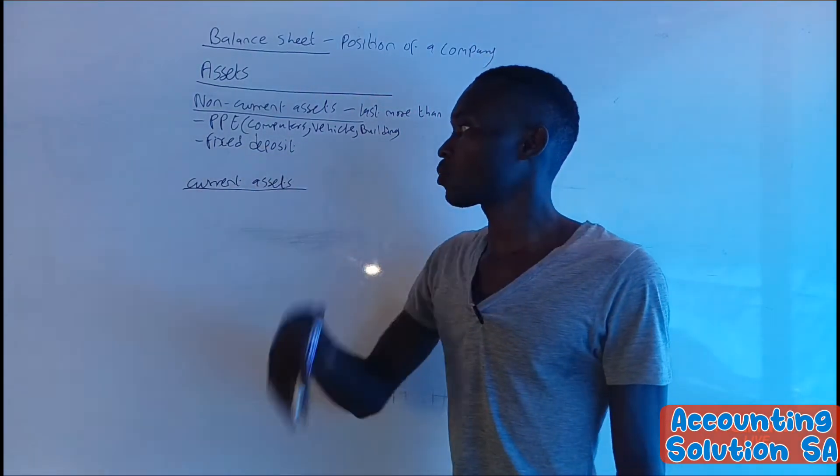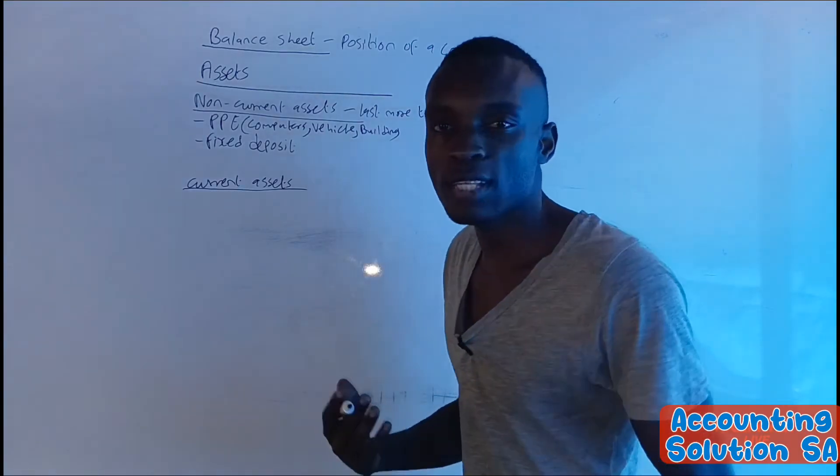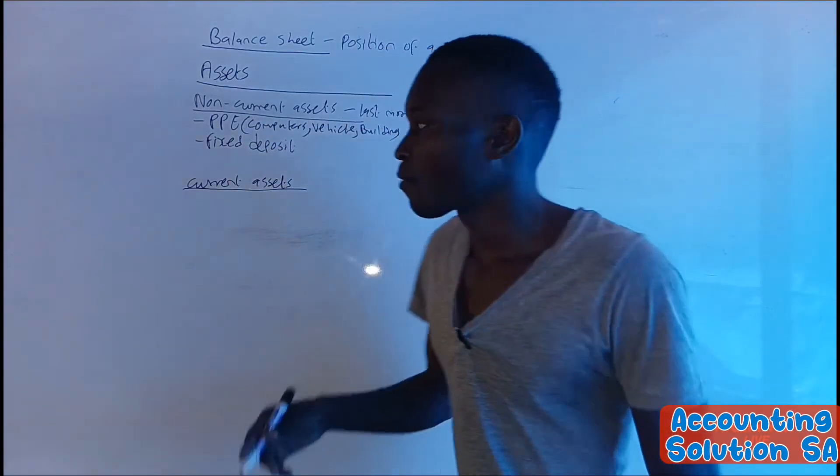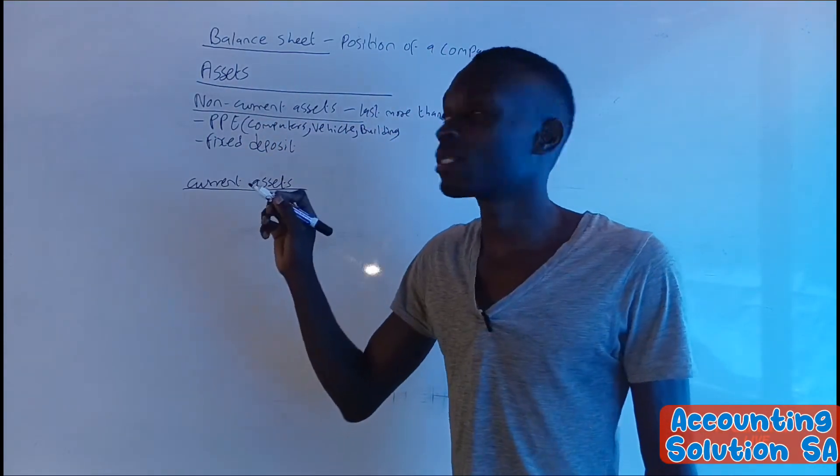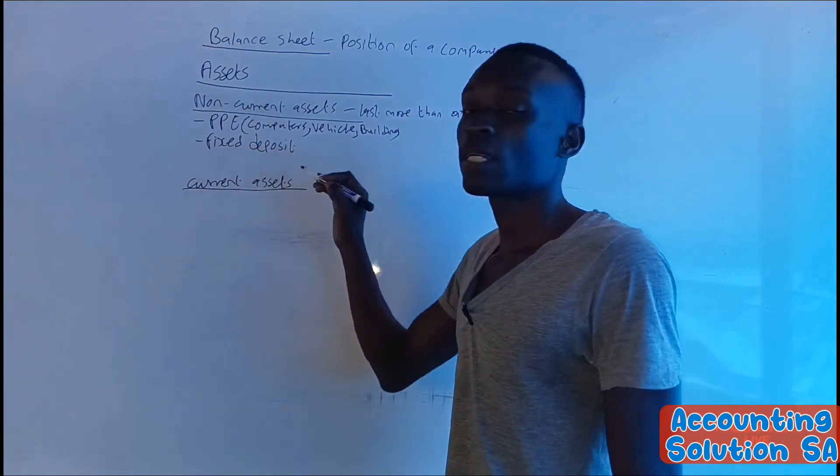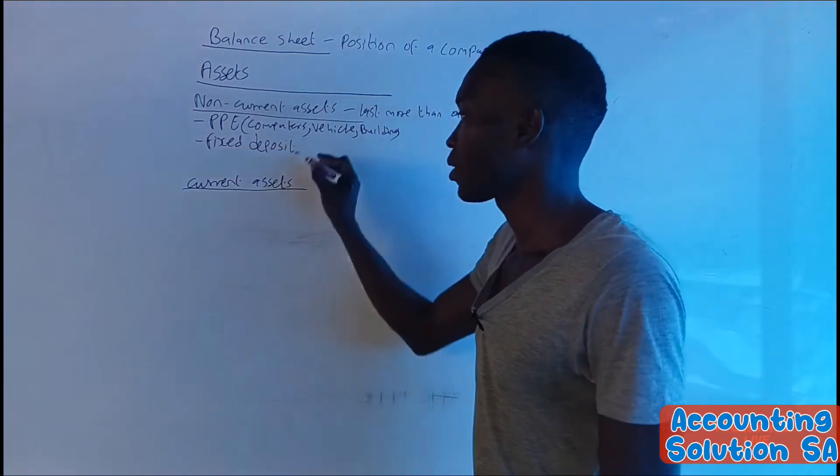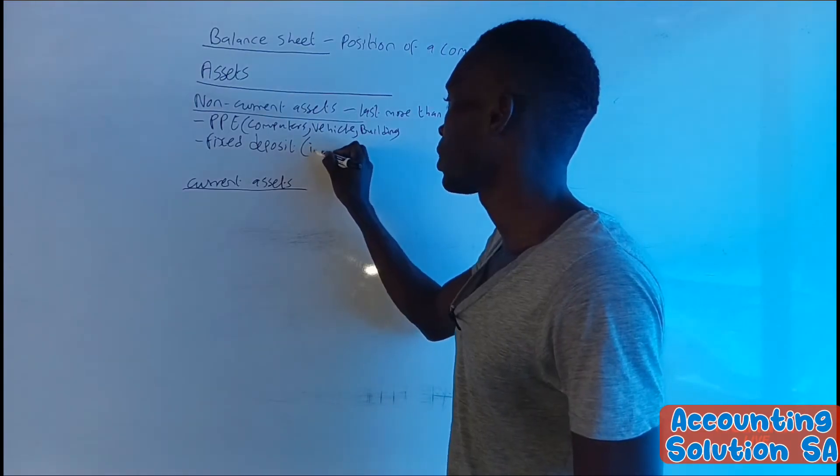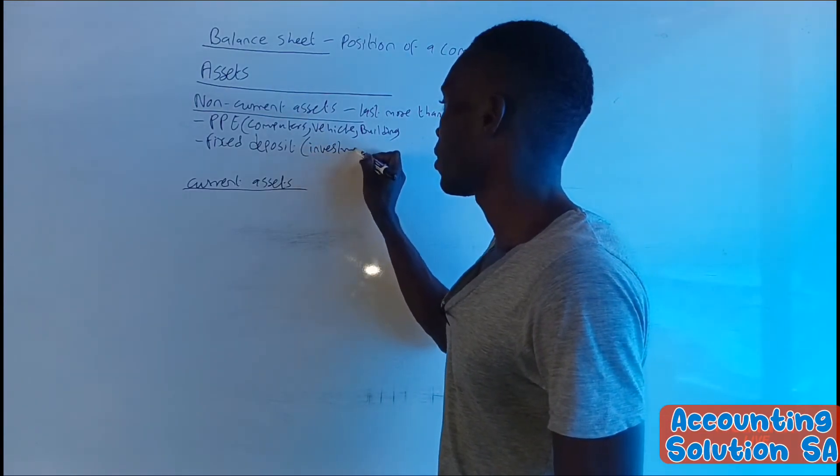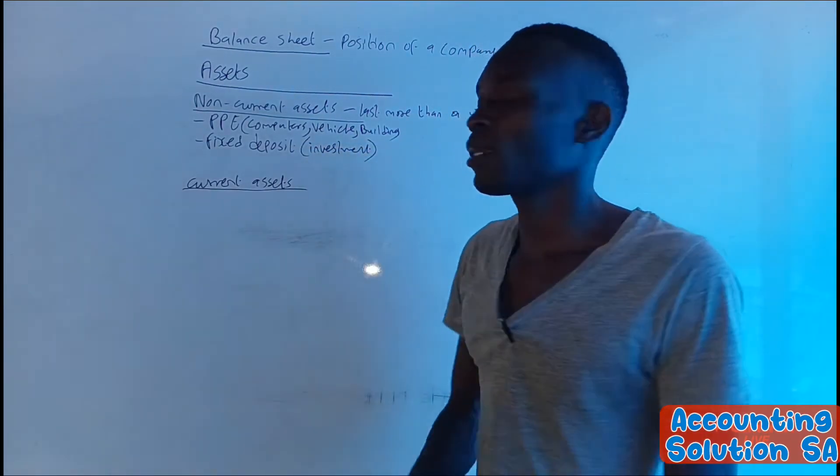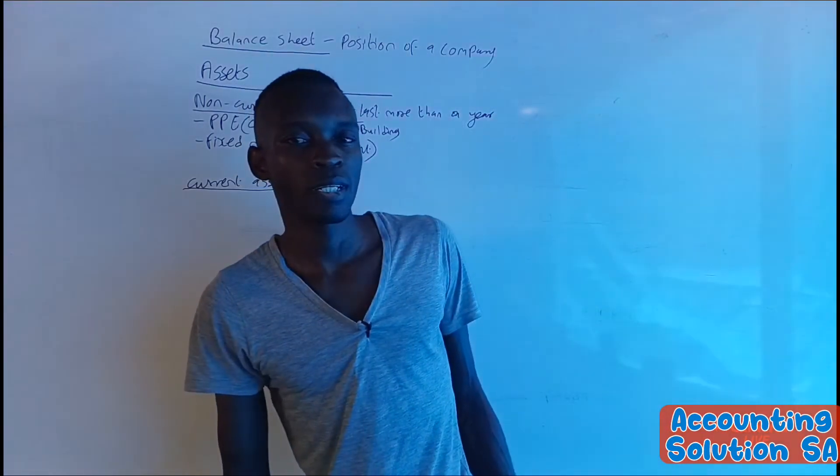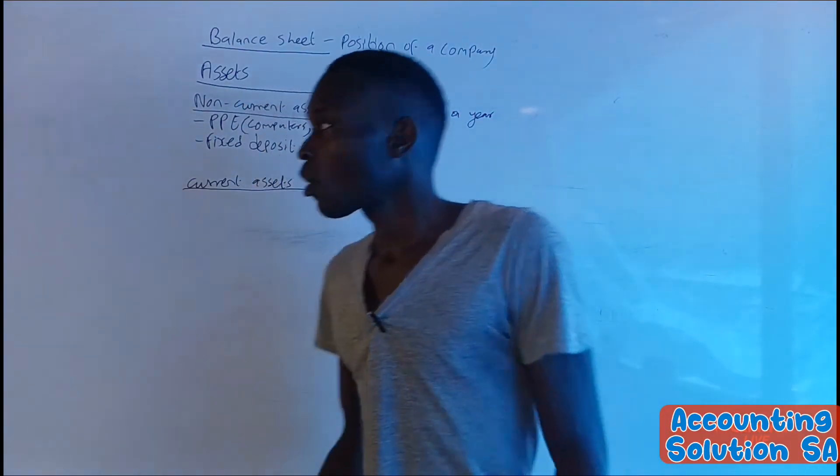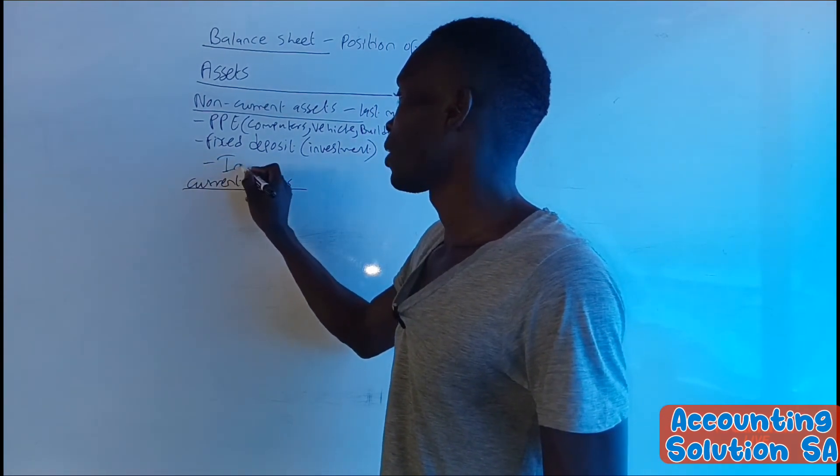So number two, I said, is fixed deposit. If you invest into a bank for more than 12 months, we call it fixed deposit. Actually, this is also known as investment. It's investment, but in terms of what? Deposit, in terms of cash. Because we also have investment property.